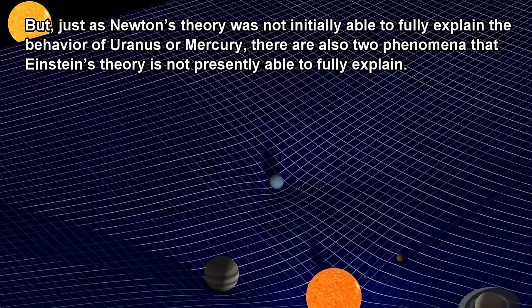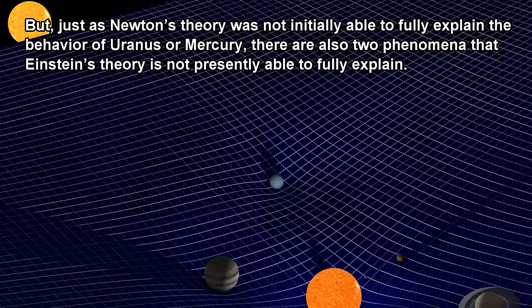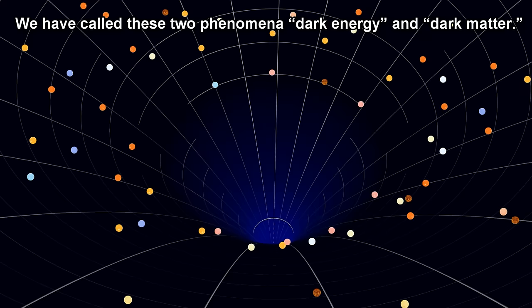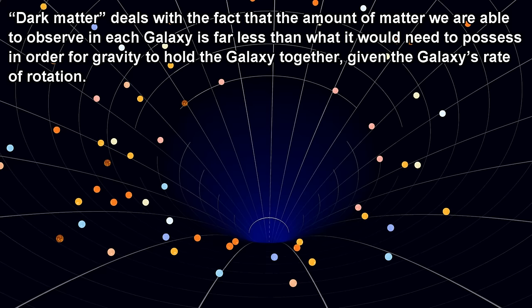But, just as Newton's theory was not initially able to fully explain the behavior of Uranus or Mercury, there are also two phenomena that Einstein's theory is not presently able to fully explain. We have called these two phenomena dark energy and dark matter.